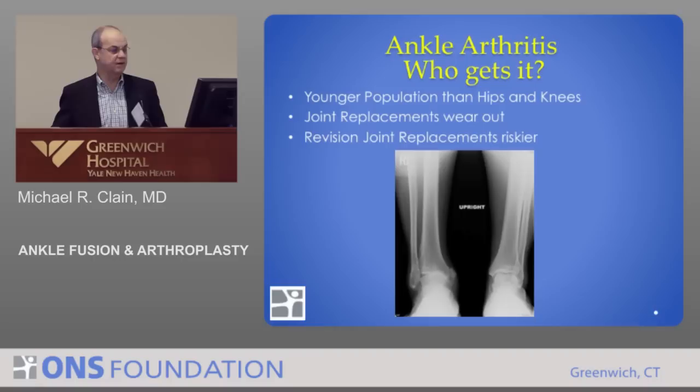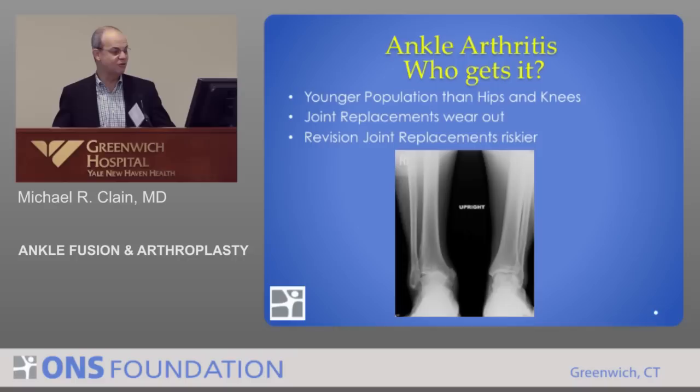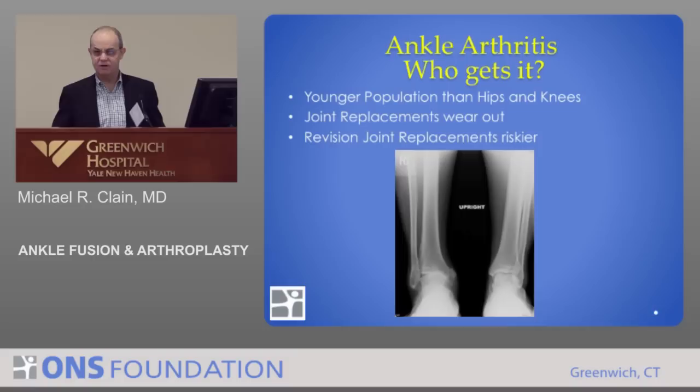Who gets ankle arthritis? A younger population than hips and knees — that's important. A lot of the concerns are geared toward what you do about a young person, a 40-year-old who needs a joint replacement. Every man-made object you put into someone will wear out, so putting an ankle replacement into a 40-year-old is going to be a problem down the road. And you really don't want to do a second joint replacement if possible, because there's a whole slew of risks much greater than a primary joint replacement.